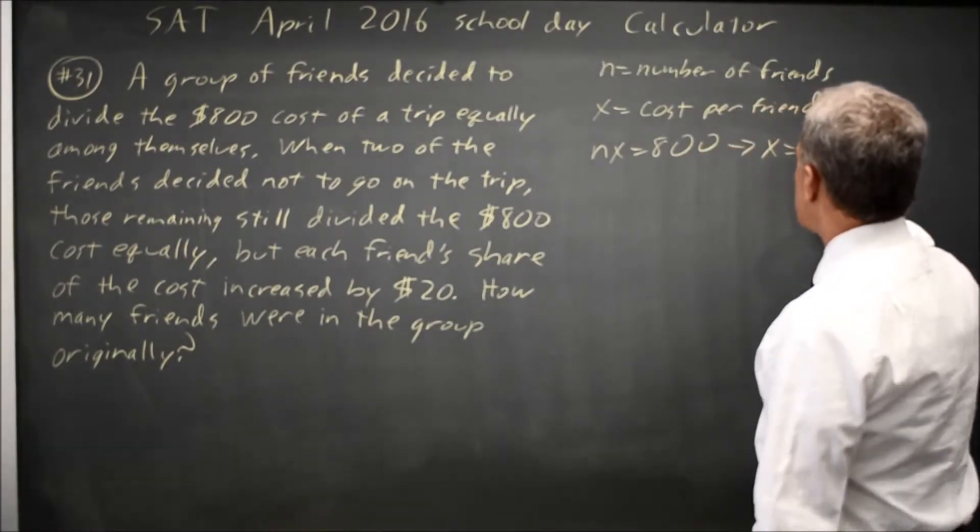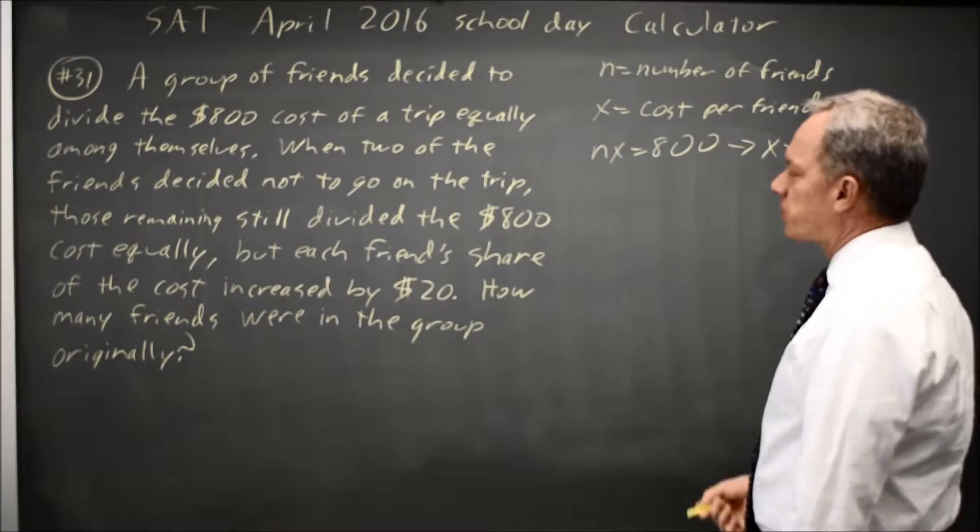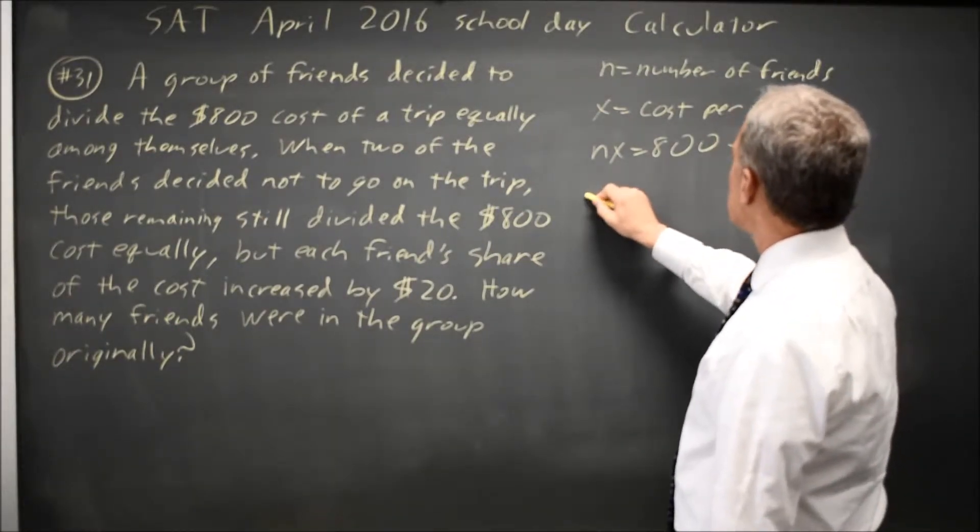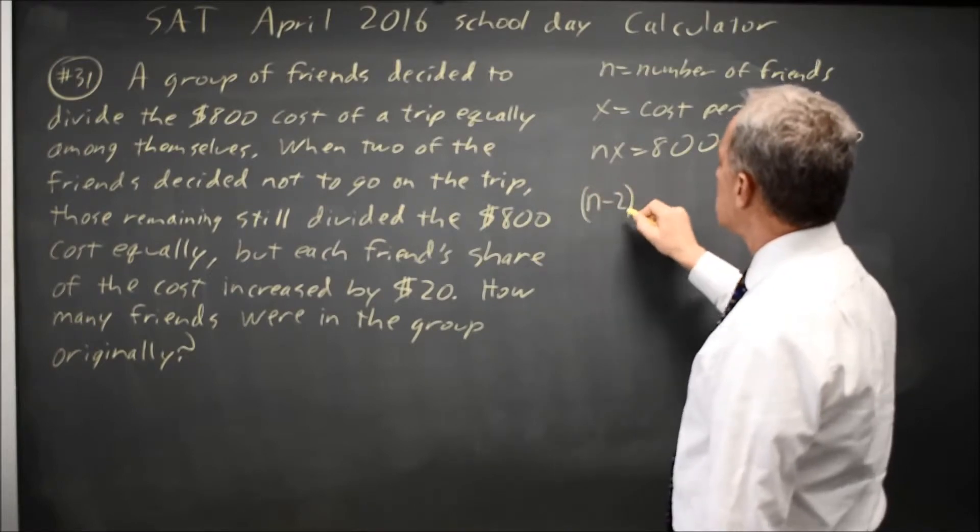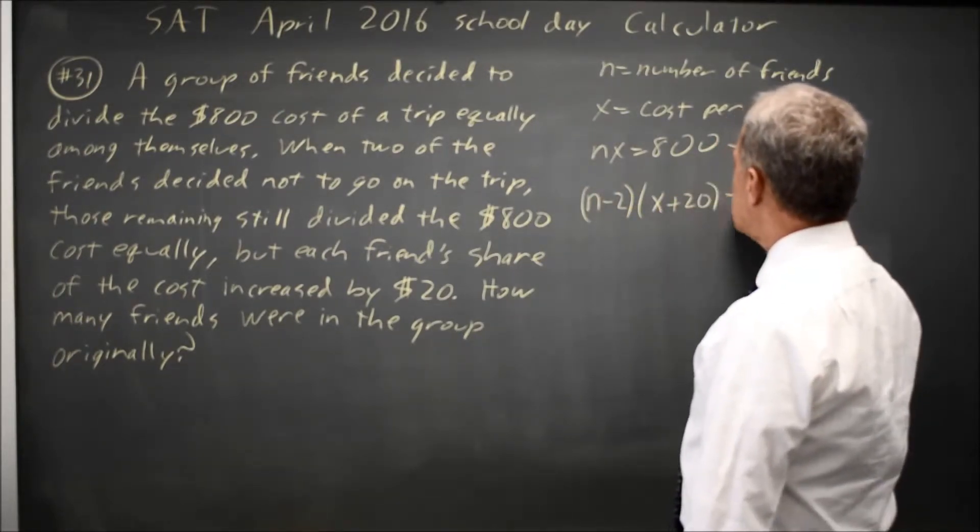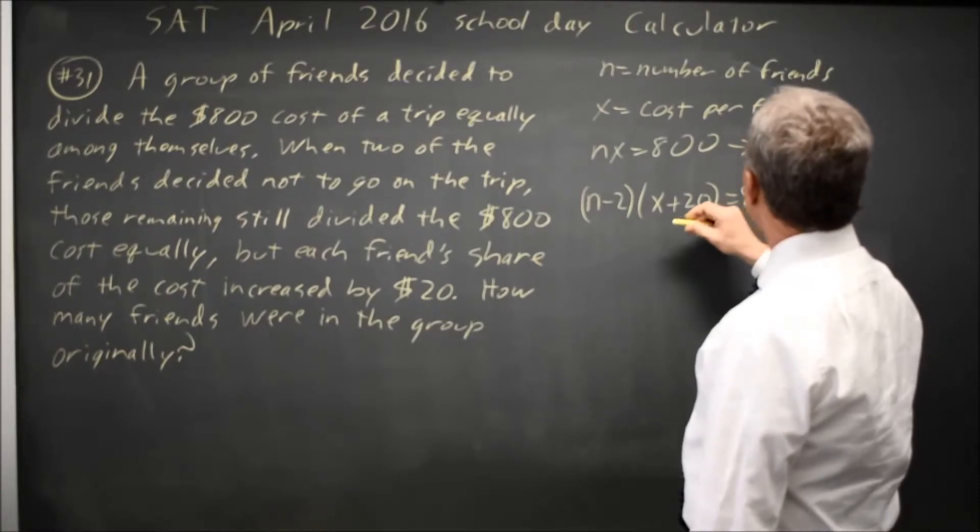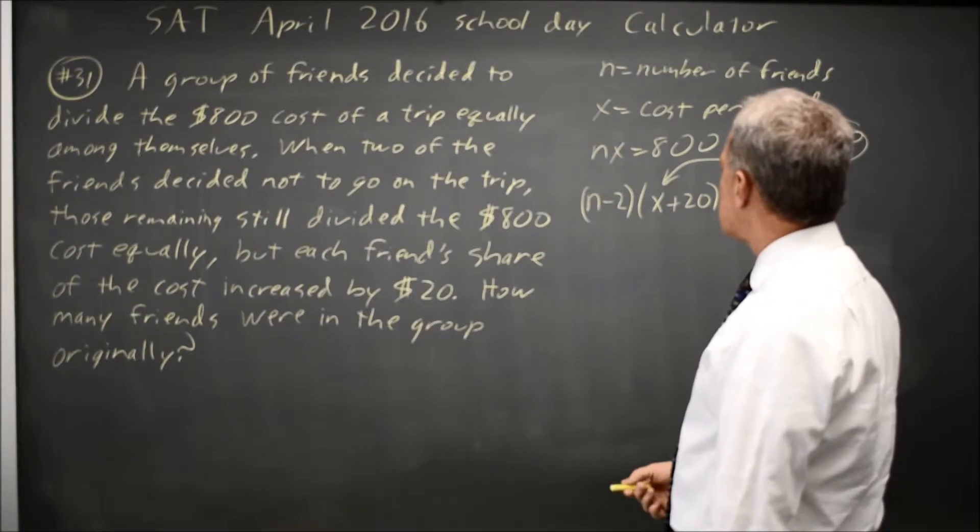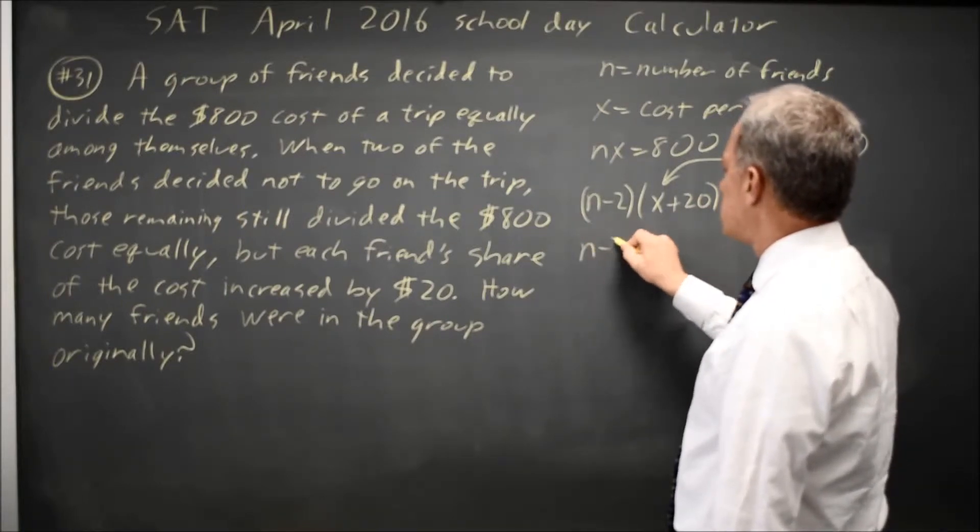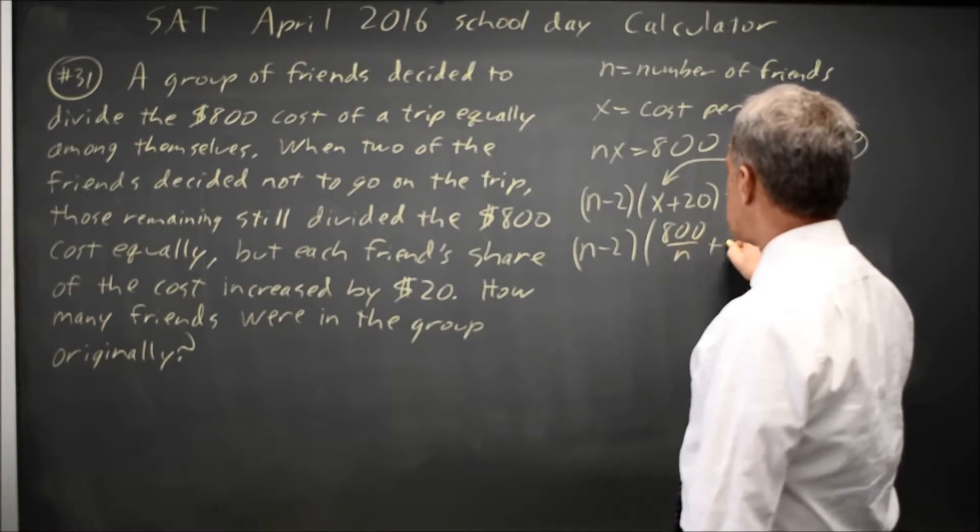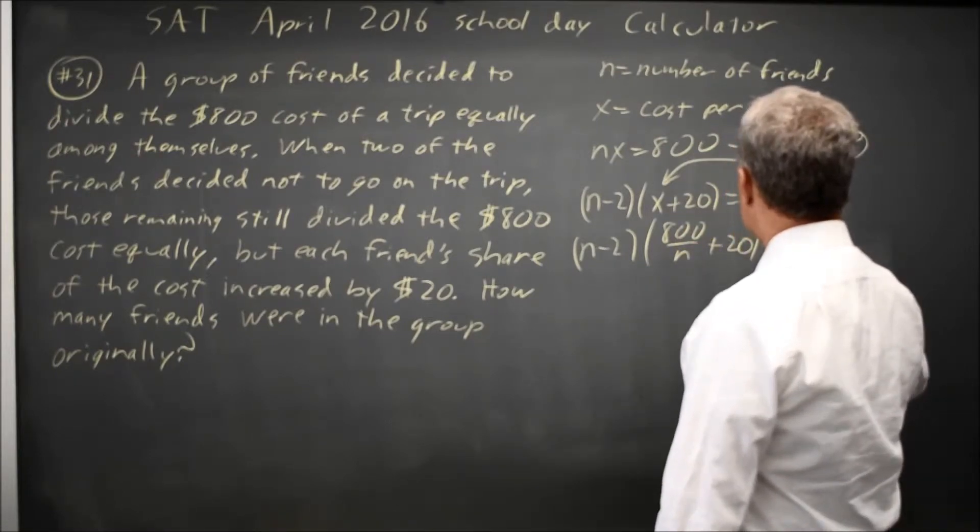x equals 800 over n. Once the two friends drop out, the cost, number of friends minus 2, times the price, the original price, plus 20, is still equal to 800. And I have an expression I can substitute in for x, the original cost. So n minus 2, 800 over n plus 20, equals 800.